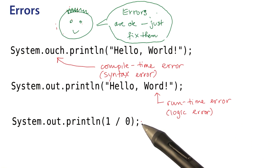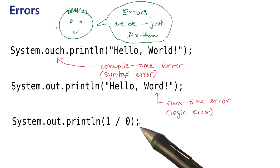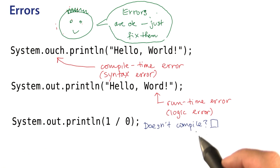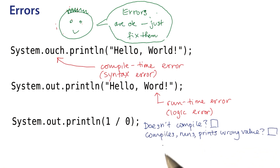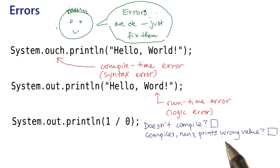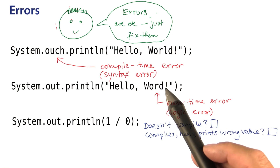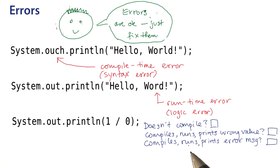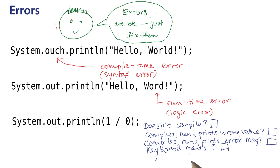Now have a look at this statement — it also has an error. What do you think will happen when you try to compile and run a program containing this statement? Do you think it doesn't even compile? Do you think it compiles and runs but prints the wrong value? Or will it compile and run and then print an error message? If you have BlueJ open right now, just give it a quick try.